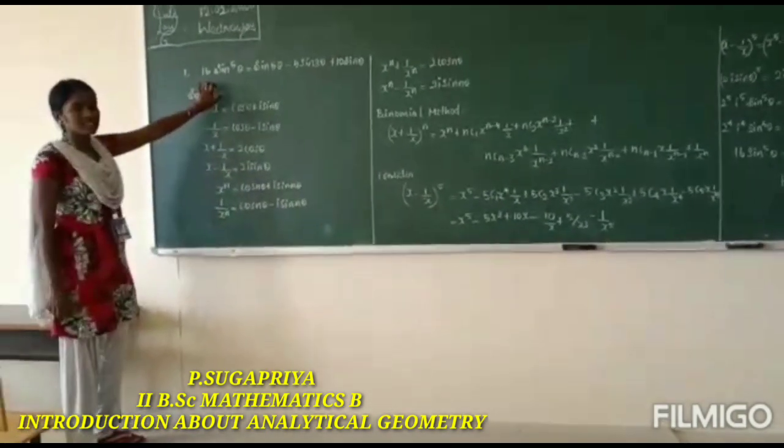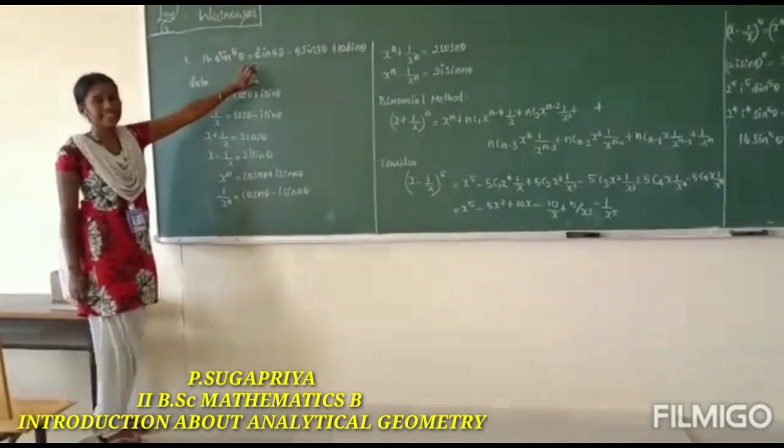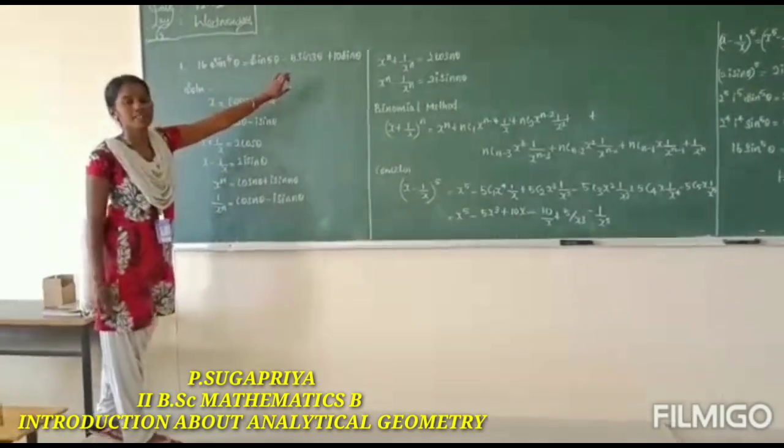We take the problem: 16 sin^5 theta equals sin 5 theta minus 5 sin 3 theta plus 10 sin theta.